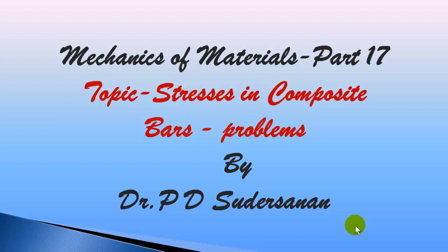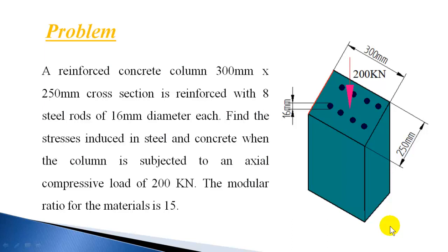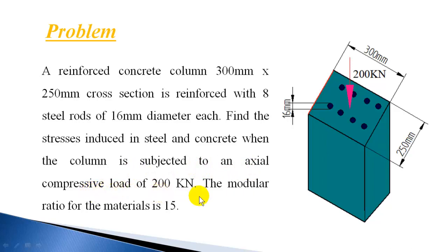Welcome to my class on mechanics of materials. In today's class I'll explain two numerical examples on composite bars. The first example: a reinforced concrete column 300 mm by 250 mm cross-section is reinforced with eight steel rods of 16 mm diameter each. Find the stresses induced in steel and concrete when the column is subjected to an axial compressive load of 200 kN. The modular ratio for the materials is 15.